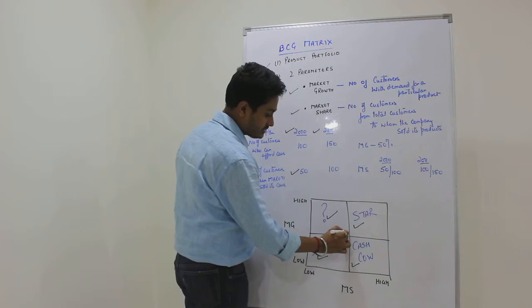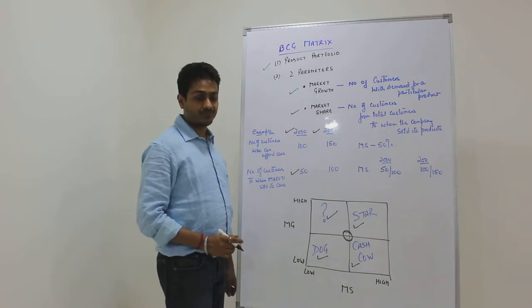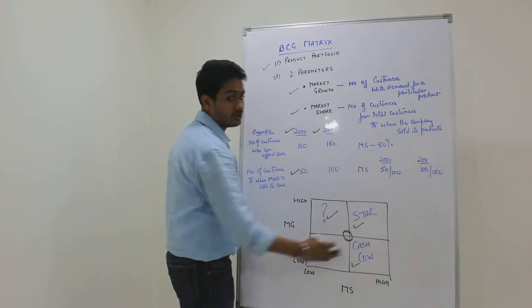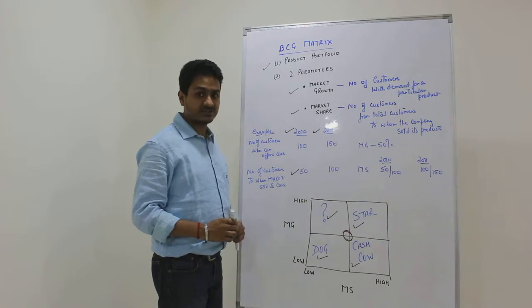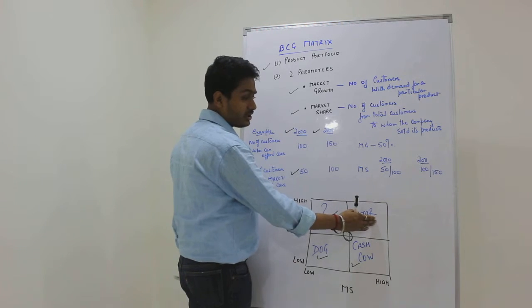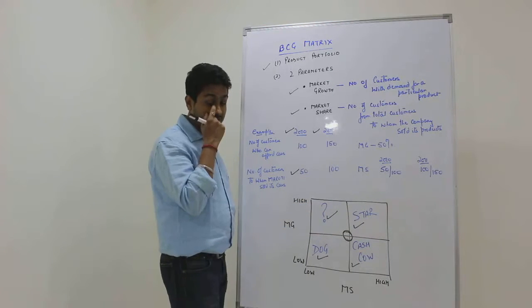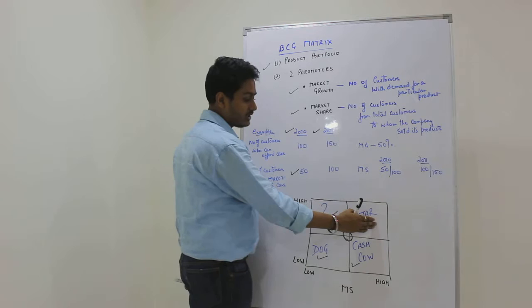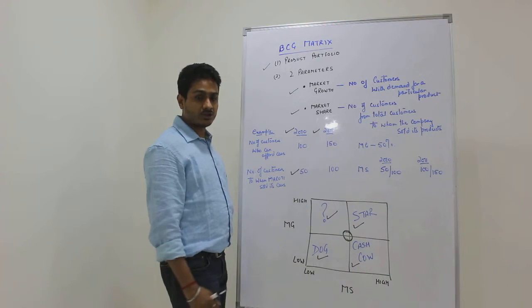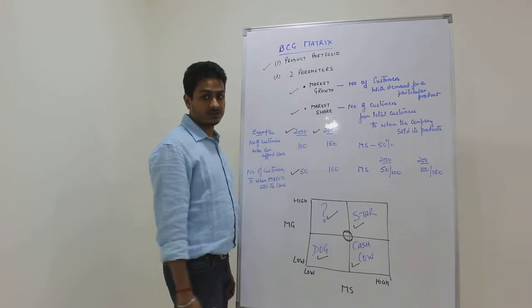Now these products can keep moving across the 2x2 grid. Cash cow is a product that generally helps the company to survive because this is the cash generating product for an organization. The star product is also cash generating, but because it is still in the growth phase, it will also consume cash. So star is a product which becomes cash neutral. The next logical step for a star would be to transition to a cash cow.